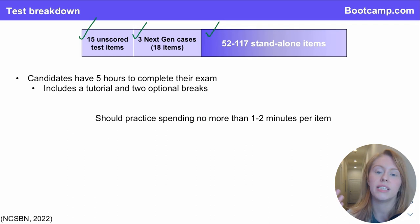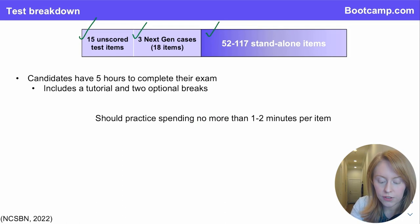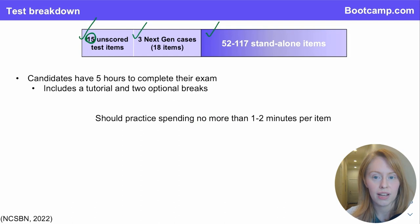Of note, don't let it confuse you if you get four next-gen cases on your NCLEX. Within these 15 unscored test items, you might see one next-gen case. So if you do answer four next-gen cases on your NCLEX, just know that one of them was an unscored test case.